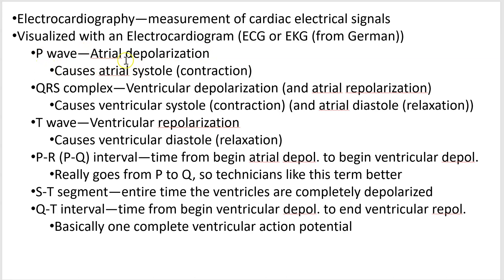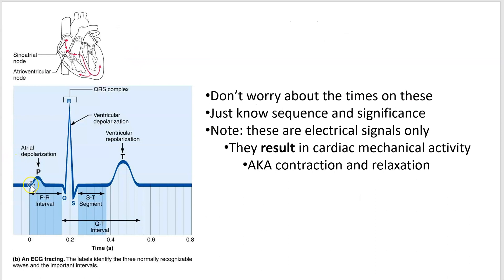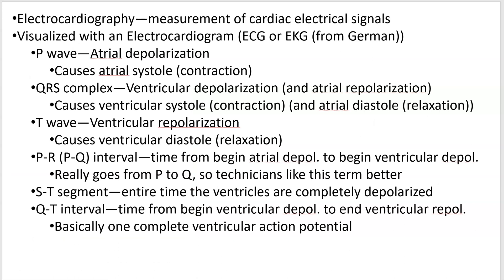The P wave — notice that these events are electrical. These curves and bumps represent the electrical events occurring in the heart, which you can detect outside the heart with electrodes on your wrist and legs. Those waves represent electrical events, but they cause mechanical events. So atrial depolarization results in atrial systole, which is contraction — you'll need to know the word systole.